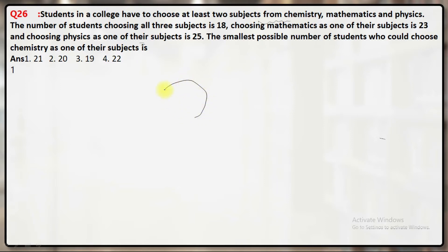Draw three circles. This one is for maths, this one is for chemistry, the third one is for physics.